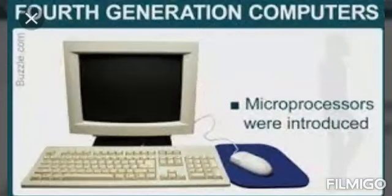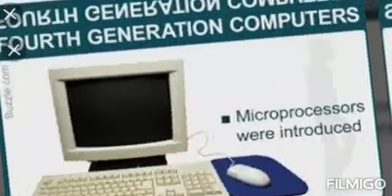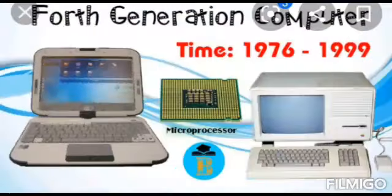Next one is 4th generation computers. In this 4th generation computer, microprocessor chips were introduced. What is meant by microprocessor? It is a programmable electronic chip used in this computer. Time period 1976 to 1999. Very small in size and less power consumption.